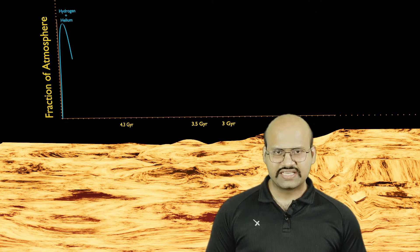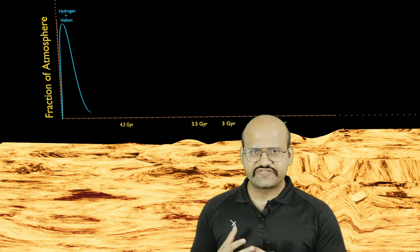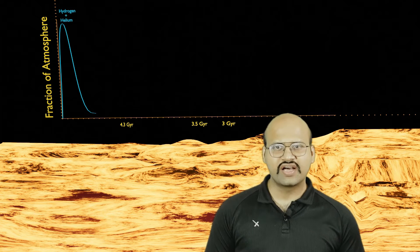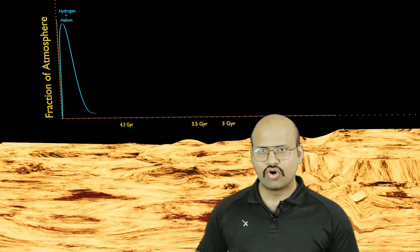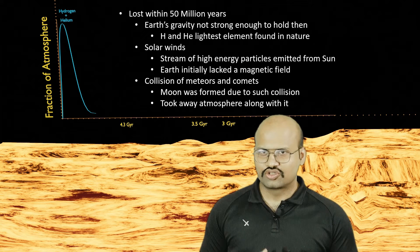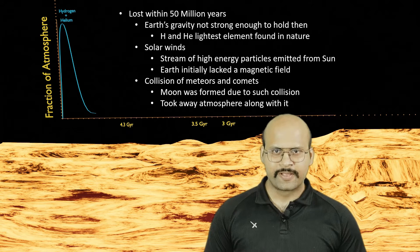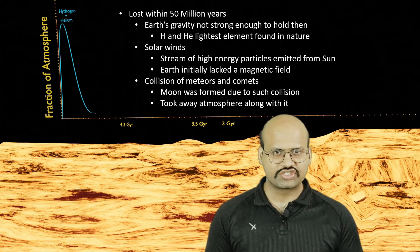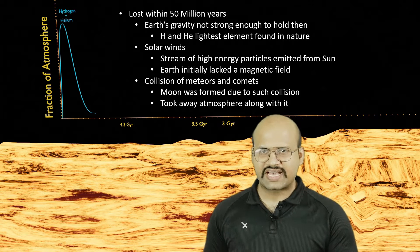The hydrogen and helium atmosphere was lost in the first 50 million years of formation of Earth. The main reasons were that Earth's gravity was not strong enough to hold on to hydrogen and helium because they are very light, solar winds took away a lot of gas, and moreover there were collisions of meteorites as well as formation of the Moon during which we lost a lot of gas from our Earth.